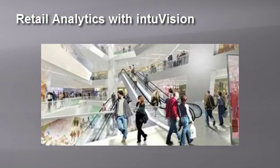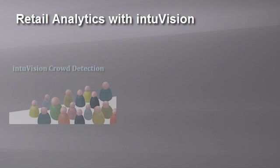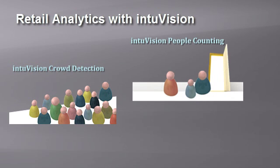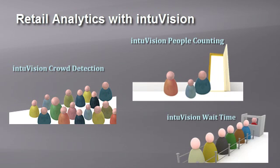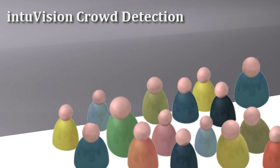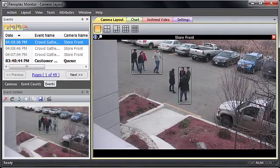One such application is retail analytics. Panoptis can be used to determine the presence of a crowd outside your facility, the number of customers entering the store, and if customers are waiting too long in line to pay. Large crowds outside your facility can indicate excitement for a new release and a large customer presence.